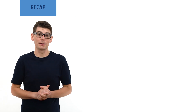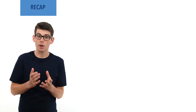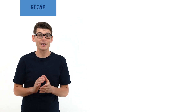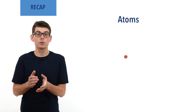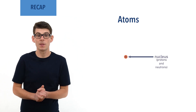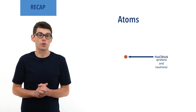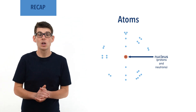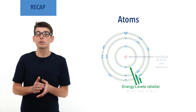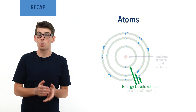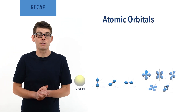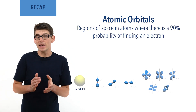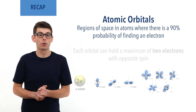Before we talk in detail about electron configurations, it is essential you are comfortable with atomic orbitals and the structure of an atom. Inside an atom there is a very small dense region of positive charge made up of protons and neutrons called the nucleus. The nucleus is surrounded by negatively charged electrons that exist in atomic orbitals within specific energy levels or shells, labelled as principal quantum numbers, starting with the number 1 for the energy level closest to the nucleus. Each atomic orbital can hold a maximum of two electrons — one pair.